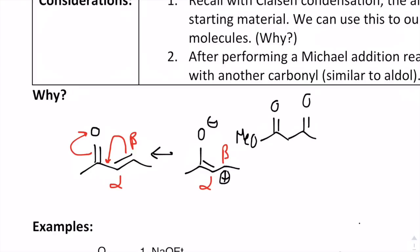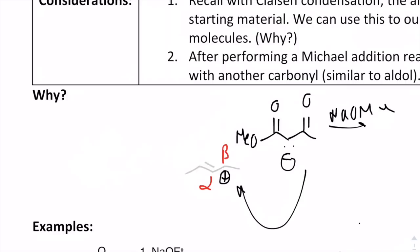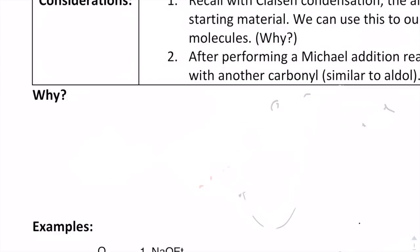We said that we can use a base such as NaOMe to deprotonate those hydrogens because of how acidic they are. So that makes this a nucleophile. If I were to get rid of that hydrogen, now I know that my enolate is a nucleophile, and that nucleophile can add in to the electrophile that is at the beta position. So we can do conjugate addition in this manner.